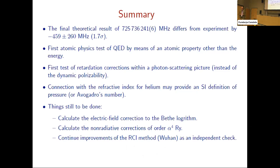In summary, our final theoretical result differs from experiment by about 1.7 standard deviations. It's the first atomic physics test of QED of an atomic property other than the energy, which gives it additional significance in terms of testing QED theory. It's the first test of retardation corrections within this photon scattering picture instead of the dynamic polarizability for an atom in an optical lattice. The connection with the refractive index provides an SI definition for pressure.